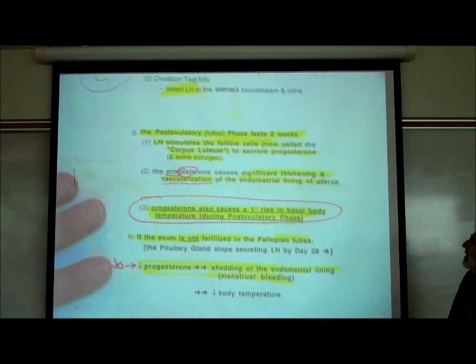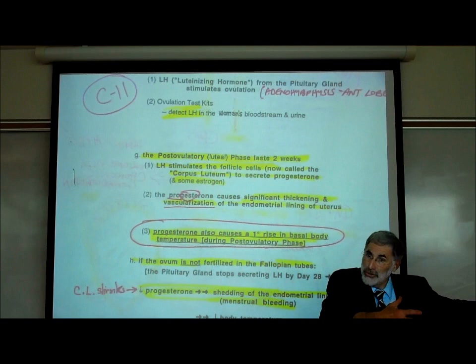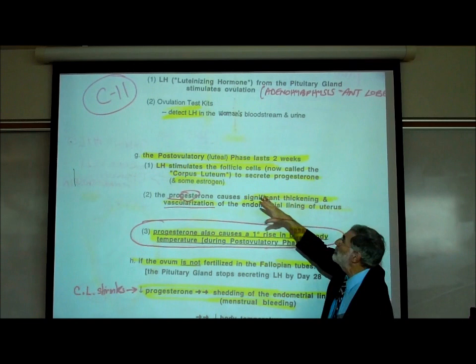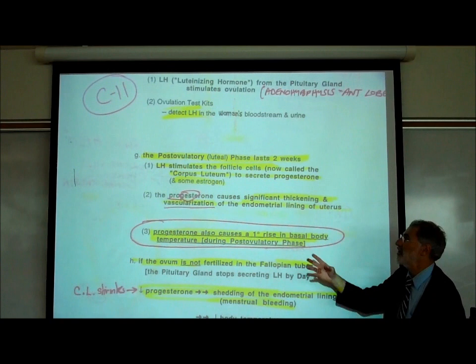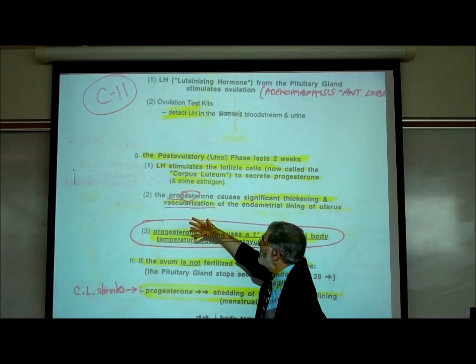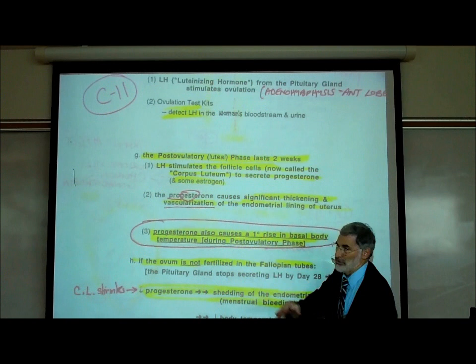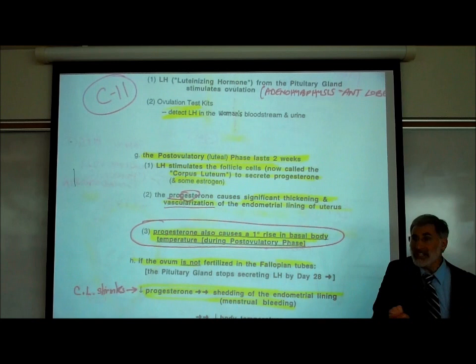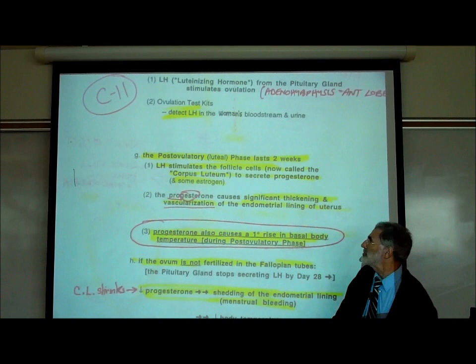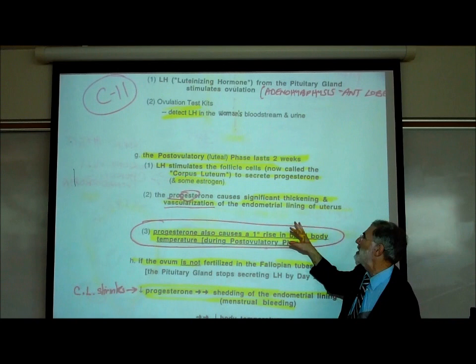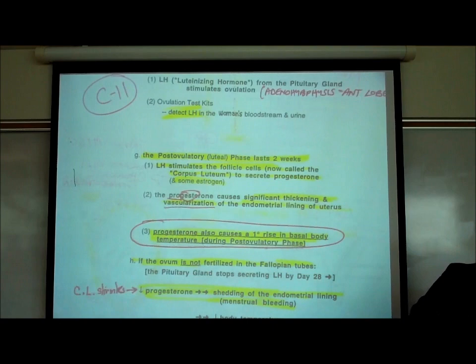The same LH that caused the egg to pop out continues to be secreted for two weeks. It stimulates the follicle cells — now called the corpus luteum — to secrete progesterone and some estrogen. The progesterone causes significant thickening of the blood vessels, called vascularization, in the endometrial lining of the womb. LH continues to be secreted until around day 28.